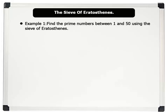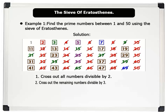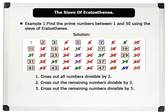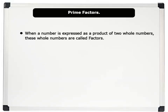Example one: find the prime numbers between 1 and 50 using the Sieve of Eratosthenes. Solution: list the numbers from 1 to 50 and apply the sieve method. Step one, cross out all numbers divisible by 2 except 2. Step two, cross out the remaining numbers divisible by 3 except 3. Step three, cross out the remaining numbers divisible by 5 except 5. Step four, cross out the remaining numbers divisible by 7 except 7. The numbers left in square boxes are the prime numbers found between 1 and 50. Now pause this video, write these numbers in your notebook, and find their prime numbers using the sieve method.